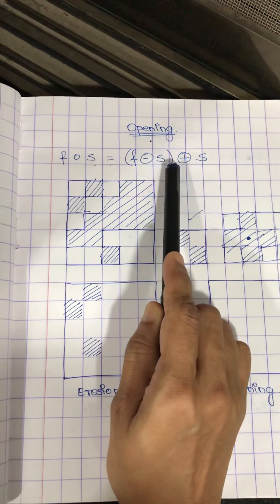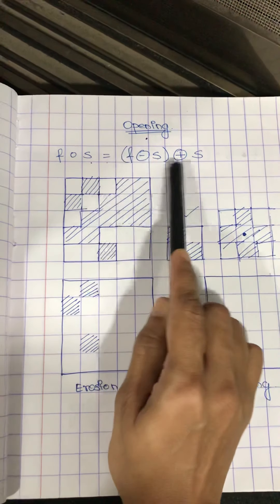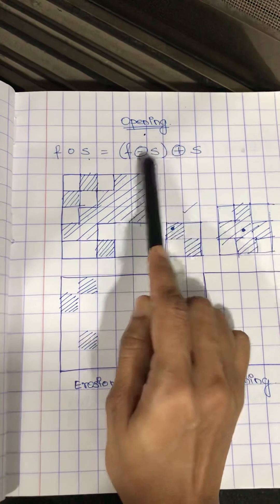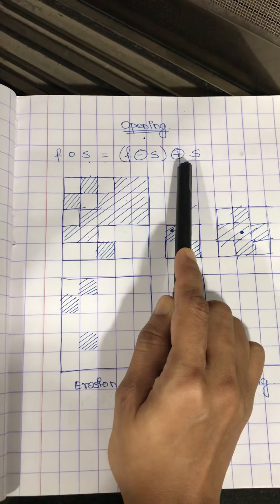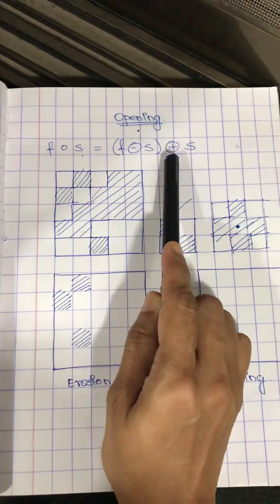Firstly, it has to be eroded by the structuring element, followed by dilation by the same structuring element. So it has to be in this sequence only, you cannot interchange the sequence. It is neither associative, nor commutative, nor distributive.